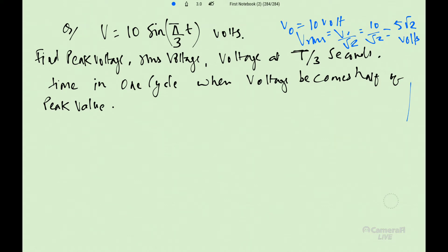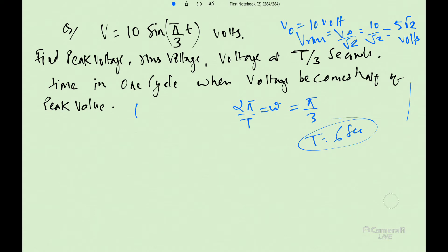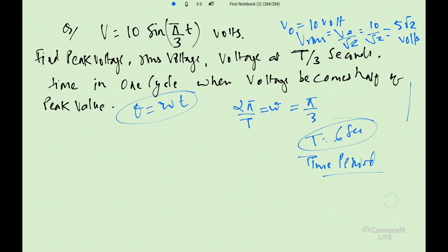Vrms is 5 root 2 volts. Now we are asked for the voltage at t = T by 3 seconds. Since omega is 2 pi by T and omega here is pi by 3, we can write T equals 6. So the time period T is 6 seconds. Now we find voltage at small t equal to T by 3.